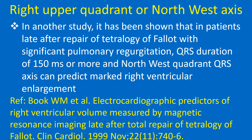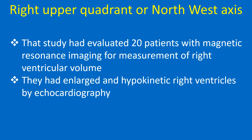In another study, it has been shown that in patients late after repair of tetralogy of Fallot with significant pulmonary regurgitation, QRS duration of 150 ms or more and north-west quadrant QRS axis can predict marked right ventricular enlargement. That study evaluated 20 patients with MRI for measurement of right ventricular volume, and they had enlarged and hypokinetic right ventricles by echocardiography.